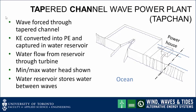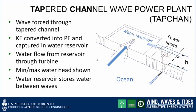Tapchan stands for Tapered Channel Water Power Plant. There's a big water reservoir with a tapered channel feeding into it. Water is forced through the tapered channel — the wave's kinetic energy is converted into potential energy and captured in the water reservoir. As the water comes up the channel it rises in height, overtops the side channels, and flows into the water reservoir. Power is then recovered by the water flowing out from the reservoir through the low head turbine in the powerhouse. The large water reservoir stores water between the waves, so the fluctuations in head that the turbine sees are minimized.